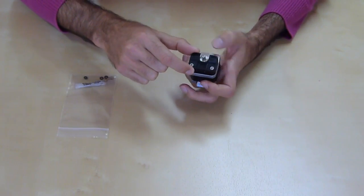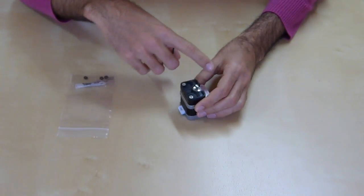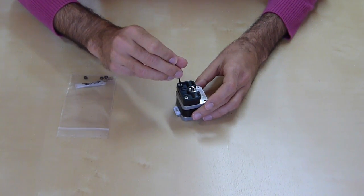To remove the top cover, you need to remove these two screws first. Make sure you have the extruder on a flat surface.